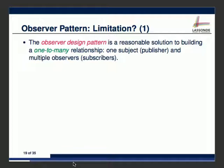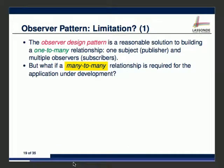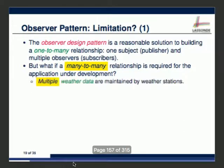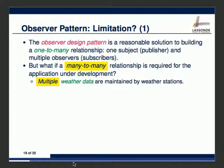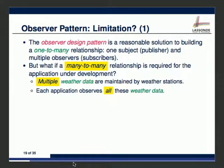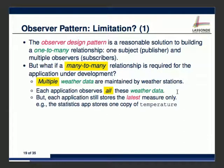Since we are computer scientists, we should do things scientifically. Let's say we are trying to deal with a many-to-many relationship. Let's extend our original weather station problem: it used to be that all observers are observing a single piece of weather data. Now let's say we have multiple weather data — each belonging to a particular weather station. Each application — current conditions, statistics, or forecast — observes all of these data sources.